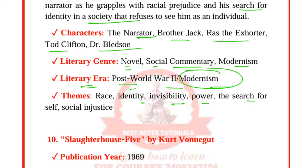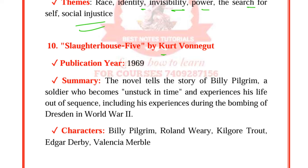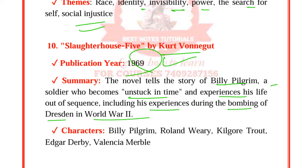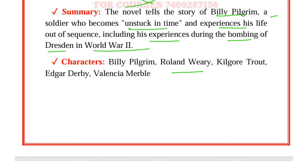The novel tells the story of Billy Pilgrim, a soldier who becomes unstuck in time and experiences life out of sequence, including his experience during the bombing of Dresden in World War II. Key characters include Billy Pilgrim, Roland Weary, Kilgore Trout, Edgar Derby, and Valencia.